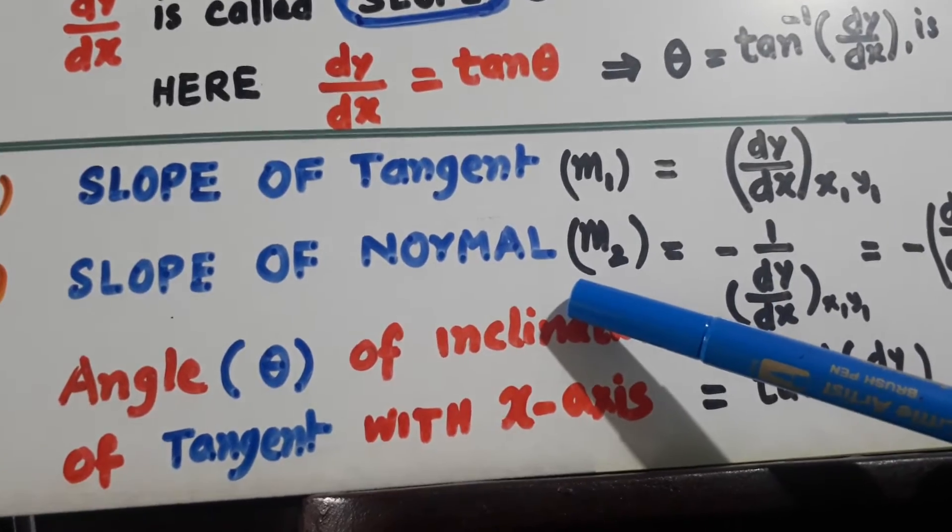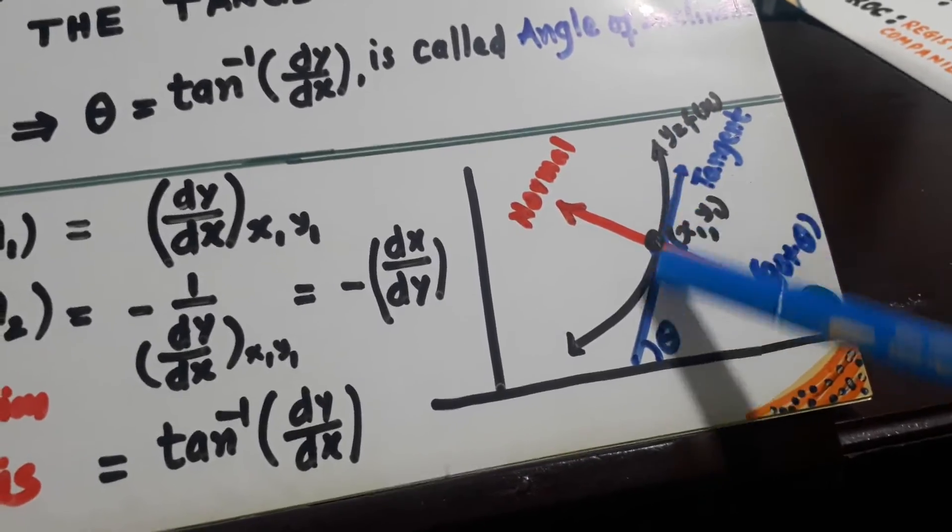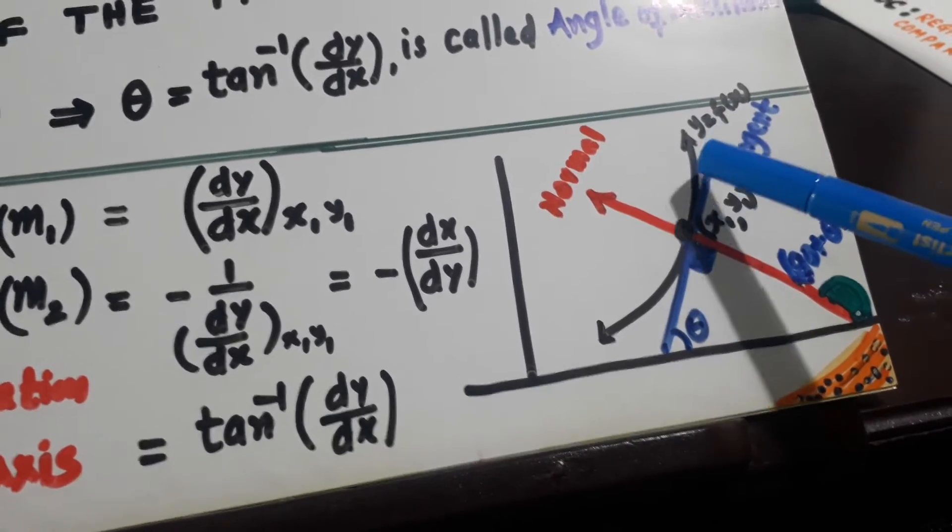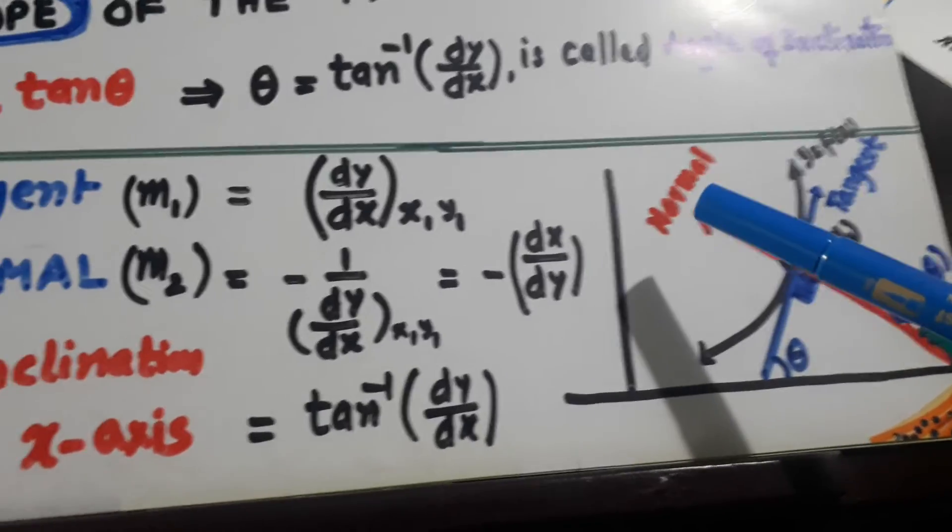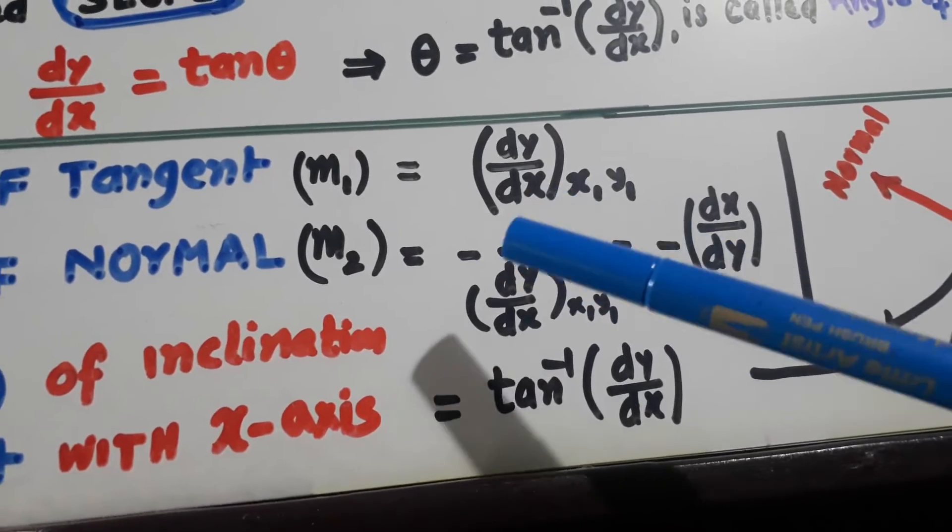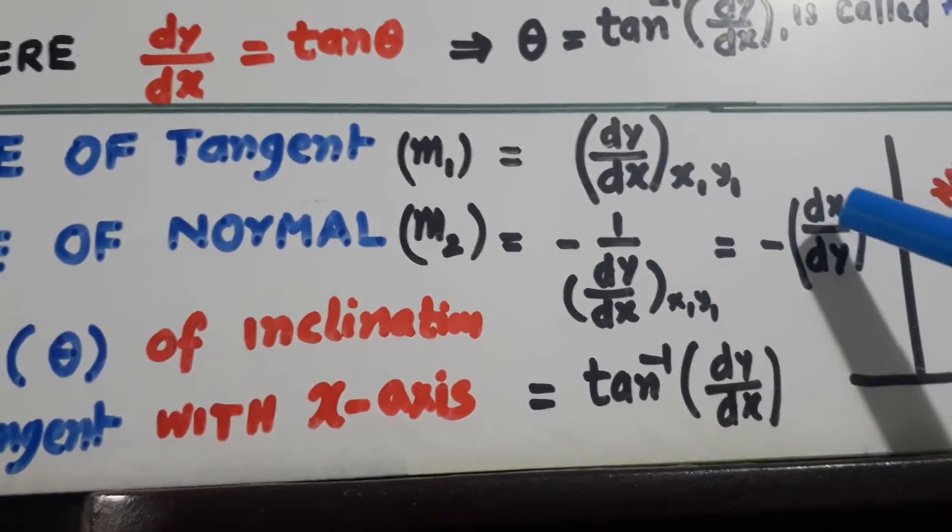Slope of normal. Look here. This is the tangent and normal is this. It is perpendicular to the tangent. So its slope will be minus reciprocal of dy by dx. So minus dx over dy.